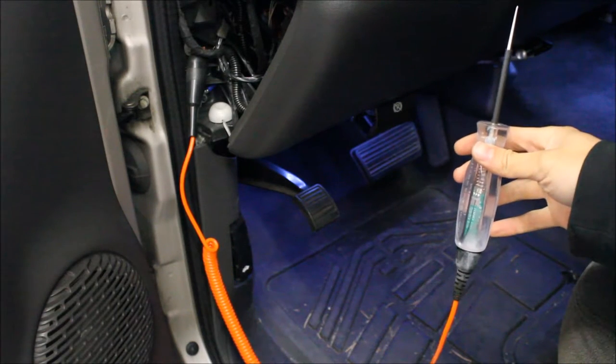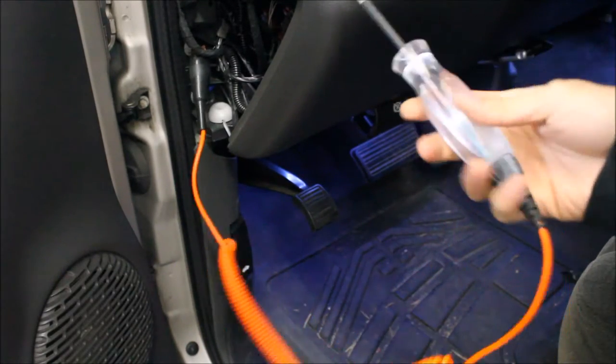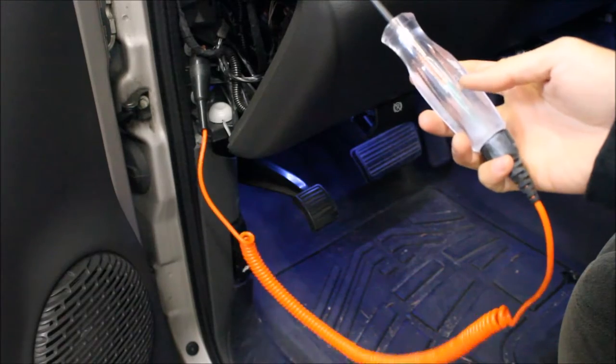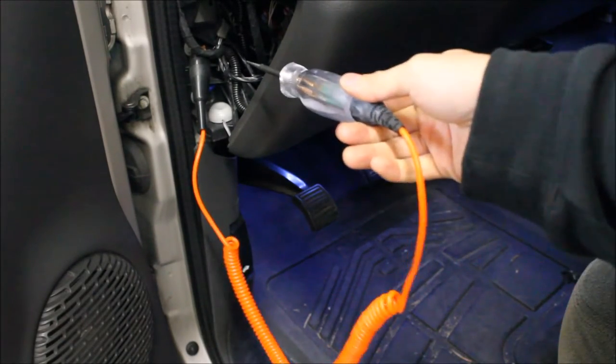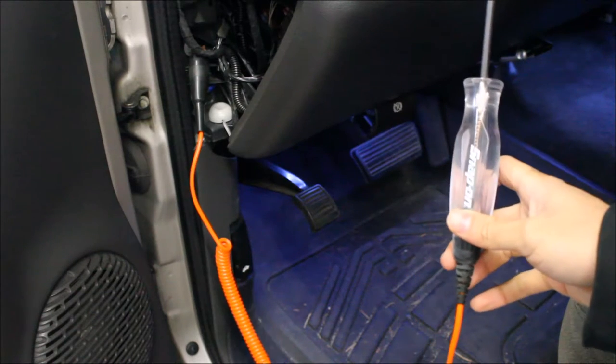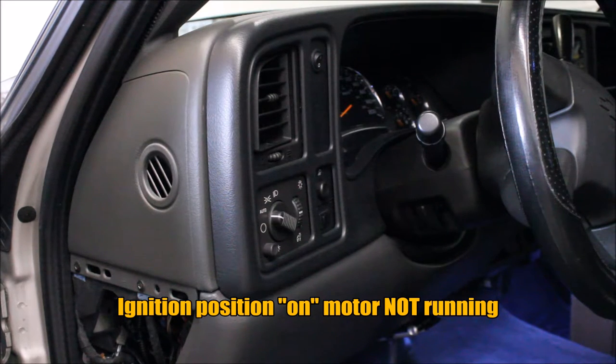For our first test, we're going to be showing you how to do this with a standard test light. Now typically what it is is just an LED light nowadays. It used to be with an incandescent bulb, but most of the ones you're going to buy are going to have an LED light and it has to hook up to a ground source somewhere. Now to use this test light, we have to turn on the ignition. So to begin our test, the first thing we're going to do is we're going to turn the ignition on but have the motor off. Now the reason we're doing this is because we need to power up the circuits in order to test them.